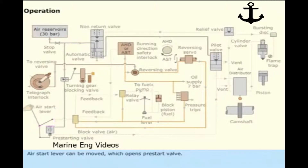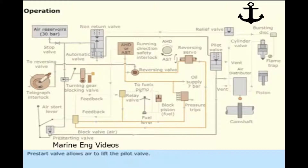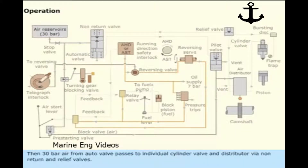The air start lever can be moved, which opens the pre-start valve. The pre-start valve allows air to lift the pilot valve. This causes the bottom of the pilot valve to vent the opening air. Then, 30 bar air from the auto valve passes to the individual cylinder valve and distributor via non-return and relief valves.